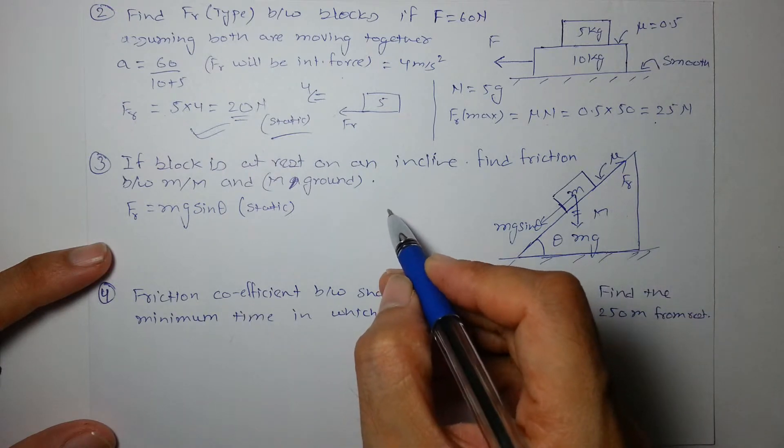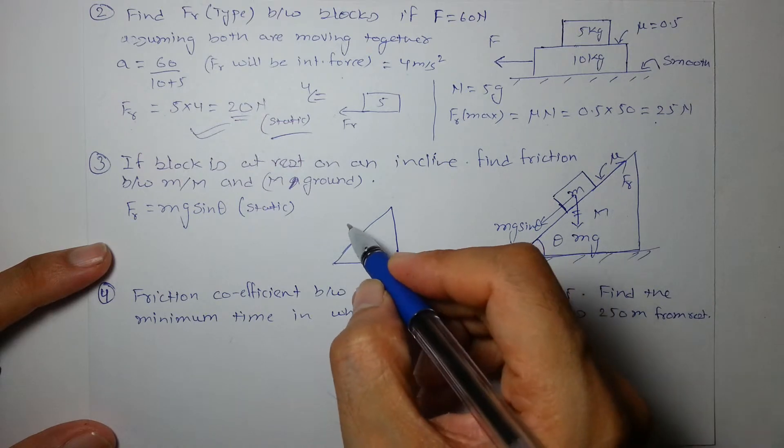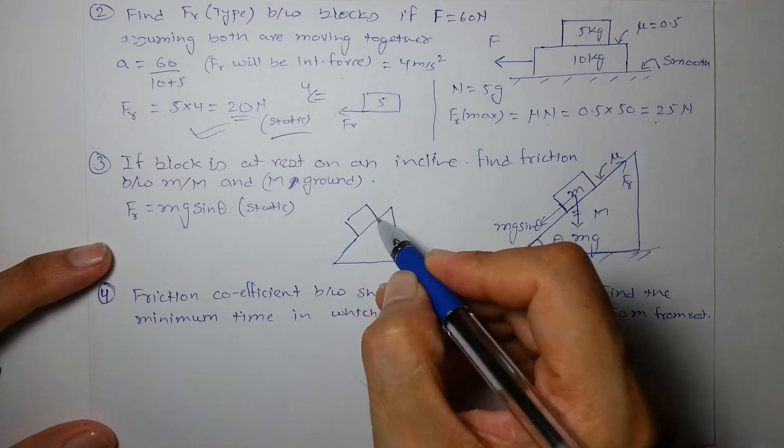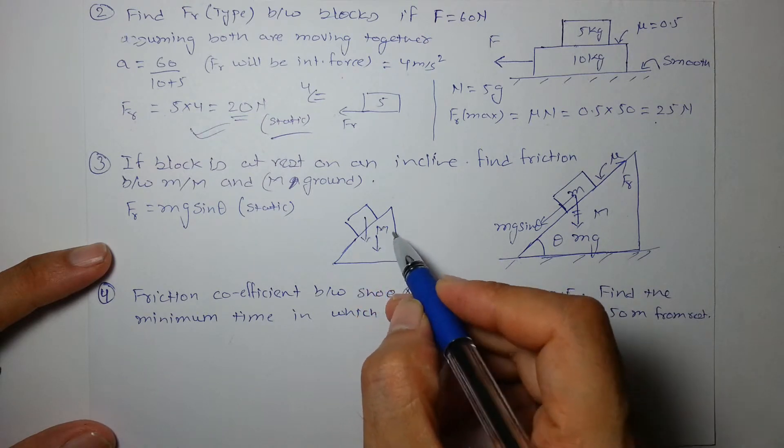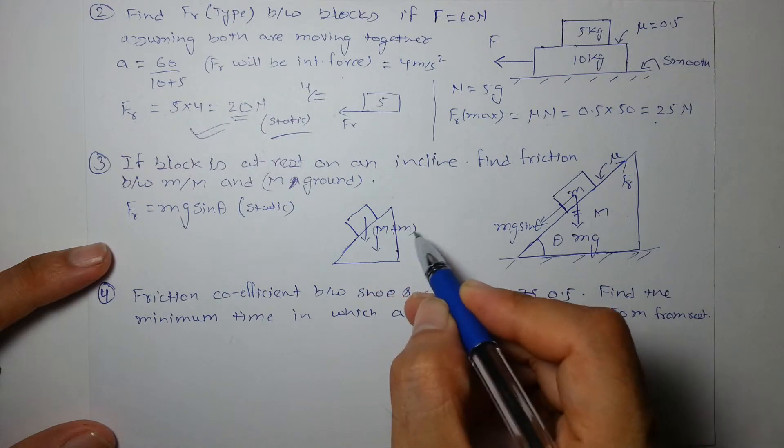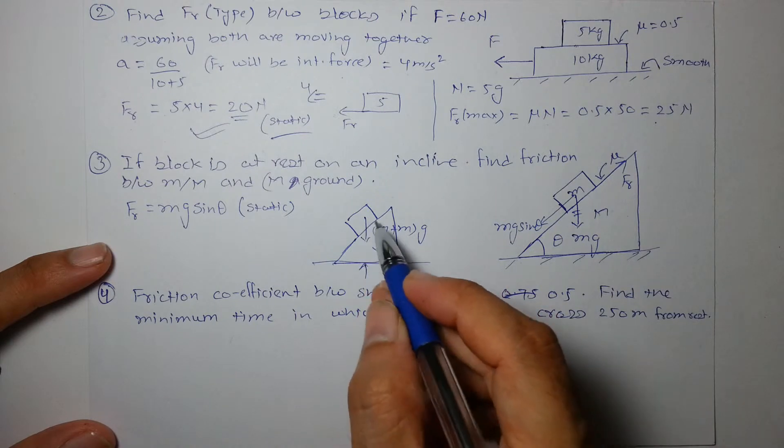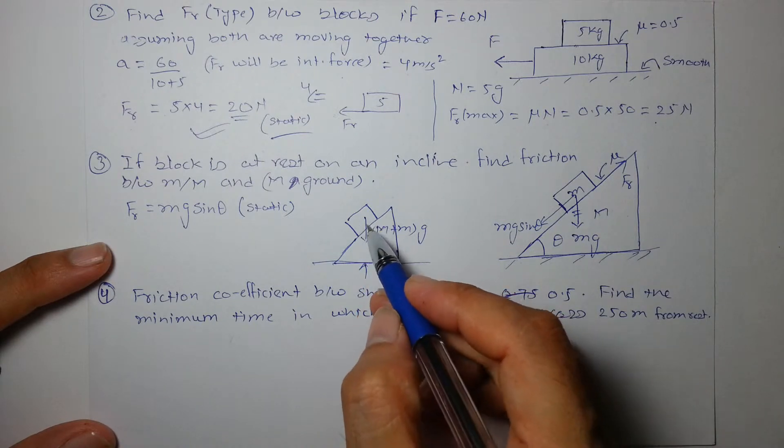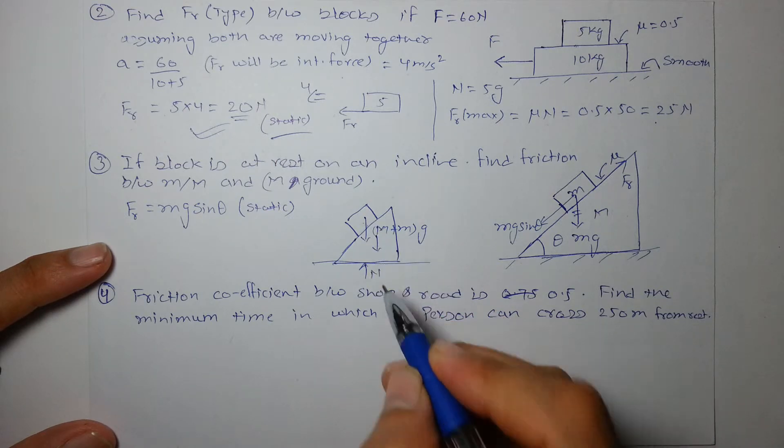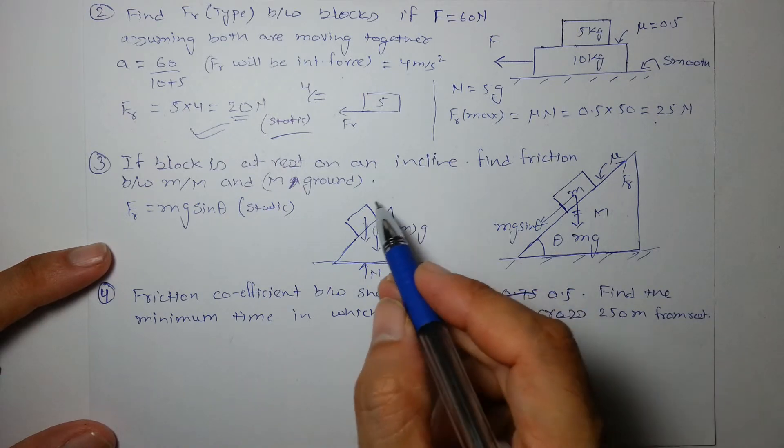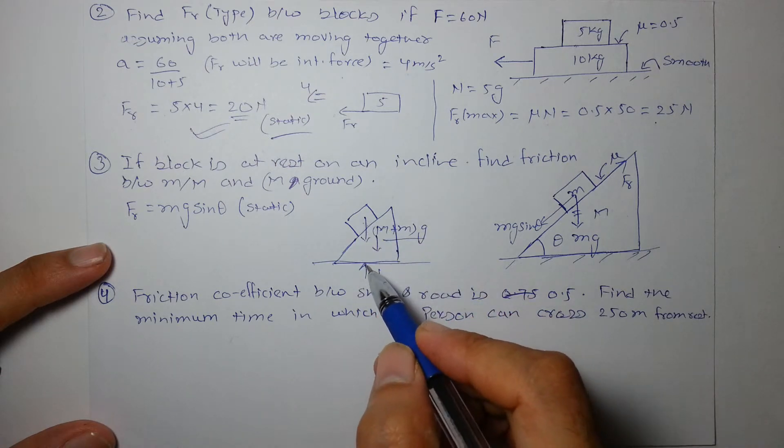And what is the friction between ground and the system? As the upper system is at rest, we can say that there are only two forces, M plus Mg in downward direction. There is no horizontal force on the whole system. Again on the whole system, normal between them and friction between them are internal forces.